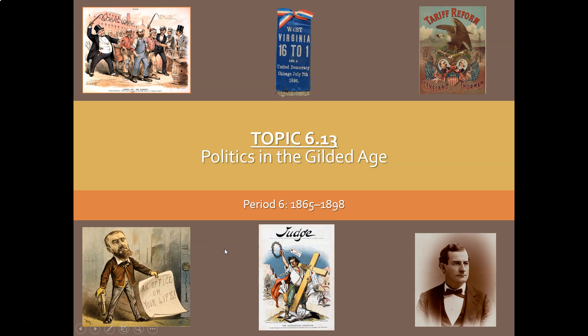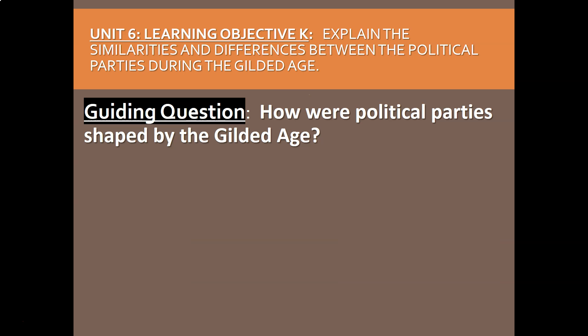Hey guys, we are now at the end of period 6 in the APUSH curriculum. Topic 6.13 is our last look at this period, and it's covering politics in the Gilded Age. There's a lot of stuff to cover in this particular topic, so the video may be a little longer than normal. We're going to focus on this guiding question: how are political parties shaped by the Gilded Age?